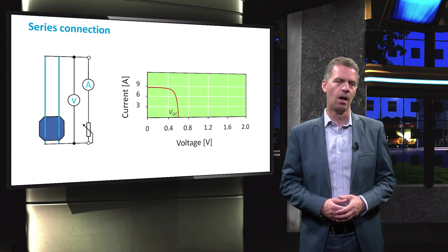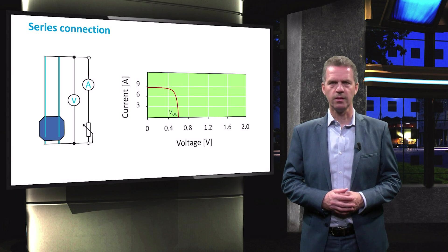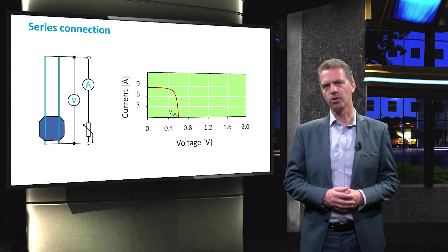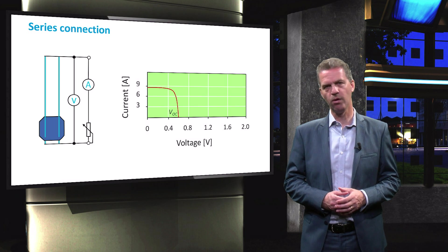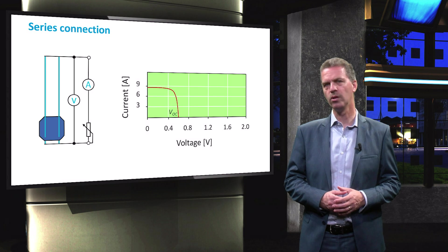We will now demonstrate the difference in series or parallel connection by looking at the IV curve of the resulting circuits. Based on the requirements of the manufacturer and consumer, the optimal layout can be found. A single crystalline silicon-based solar cell has an open circuit voltage of in-between 0.6 and 0.7 volts, depending on the technology and quality of the wafer.